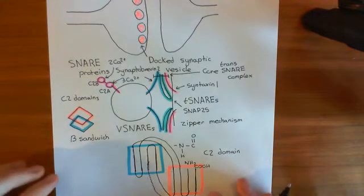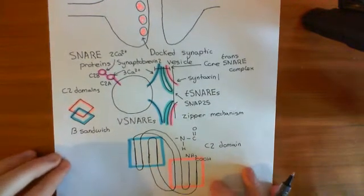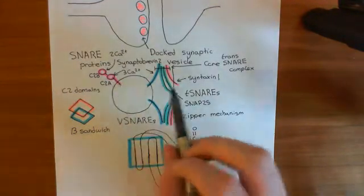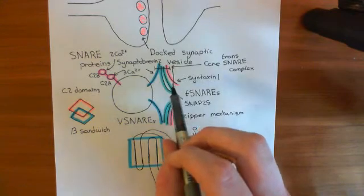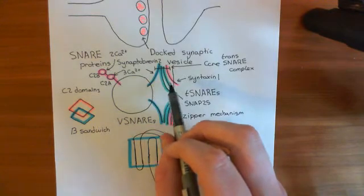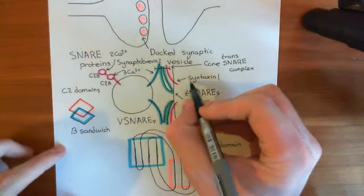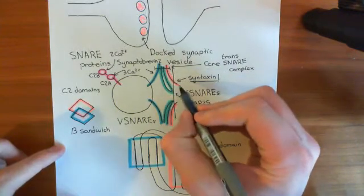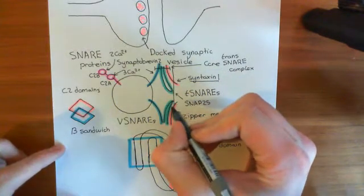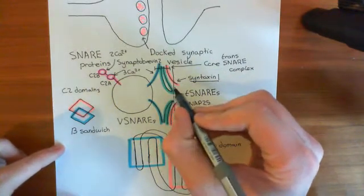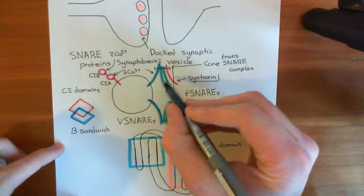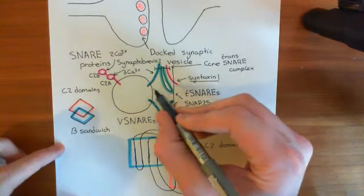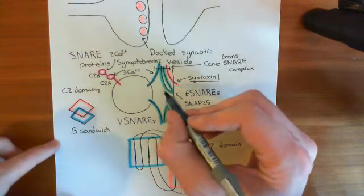We've discussed how calcium is going to bind to synaptotagmin, and basically what synaptotagmin now does is it binds to syntaxin 1 — this protein here on the membrane of the cell, basically on the plasma membrane — and that may well contribute to how it's going to fuse these two membranes together.